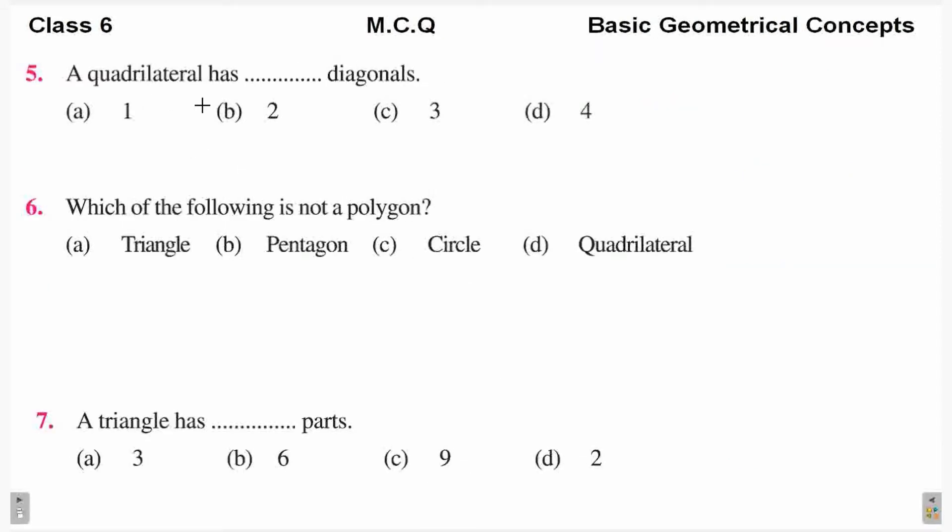Next, a quadrilateral has how many diagonals? Now, quadrilateral is a closed figure made up of 4 line segments. And diagonals, how many diagonals are there when we join opposite vertices? Here, how many diagonals become? Two.